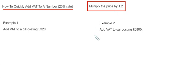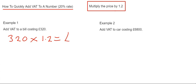Let's look at the two examples we have here. We've got to add VAT to a bill costing £320. Our quick way is just to multiply the bill by 1.2, so just put this on your calculator and we get an answer of £384. That's all you have to do.